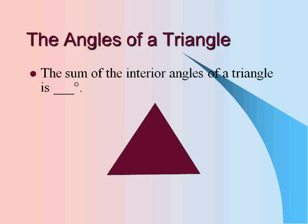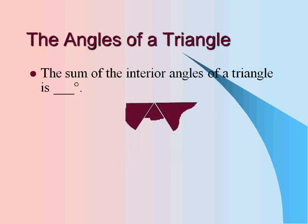So with the angles of a triangle, the sum of the interior or inside angles of a triangle will all add up to 180. If you take each of the corners and piece them together, it will form a straight edge or straight line, which is 180 degrees.